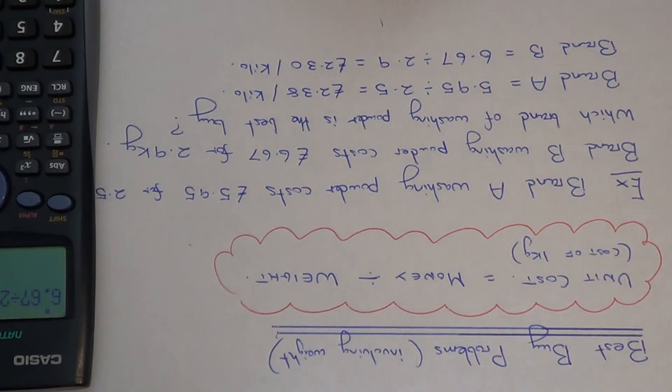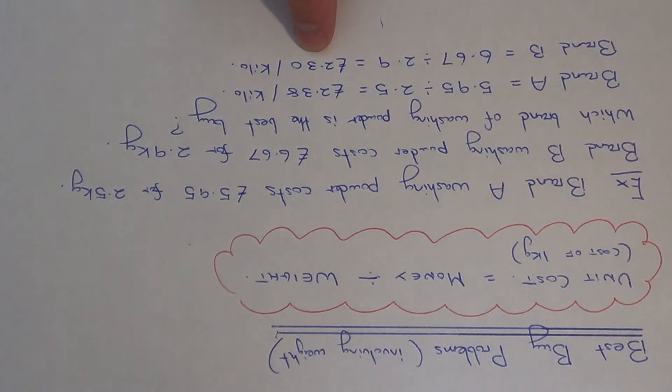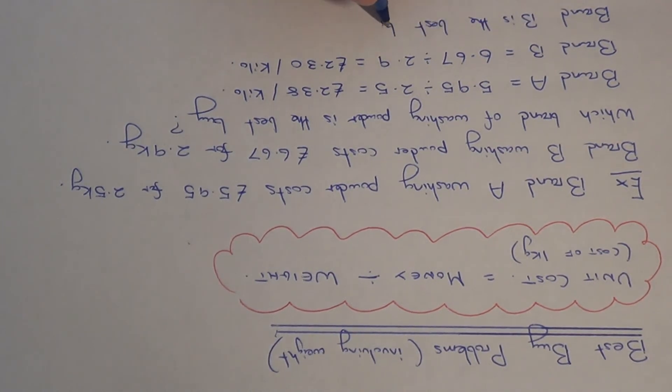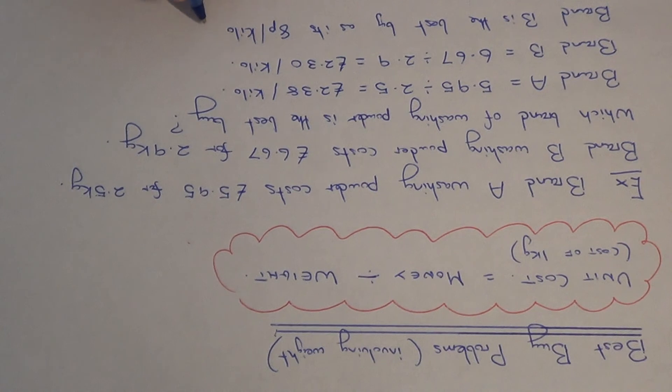So it's £2.30 for a kilo in brand B. So as you can see, brand B is the better buy. So brand B is the best buy as it's cheaper per kilo.